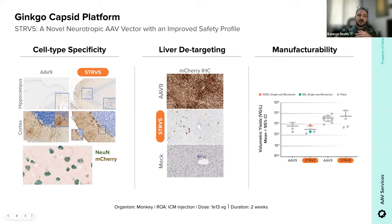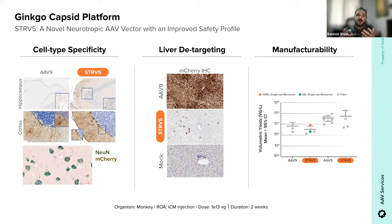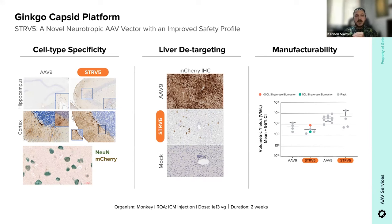Let me start with our first case study: Strive-5. This is a capsid that's ready to deploy for partners, and it's a good example of how we're viewing capsid functionality as building blocks at Ginkgo. This capsid has been extensively vetted for its biodistribution and expression in pigs, mice, and NHPs, and was selected for its cell type specificity, tissue targeting, and manufacturability. The data we're going to go over today was discussed at ASGCT 2022 and highlights each one of these individual functionalities.